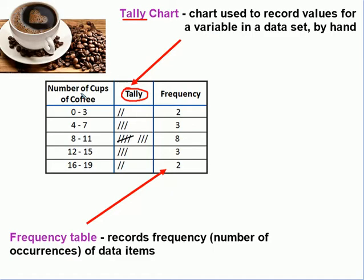So in our tally here, we have our tally chart, we are counting the number of people who had between 0 and 3 cups of coffee. And so we look at our data and we find there are two of them, so we put a slash mark for each one. For people who had between 4 and 7 cups of coffee, again we put another slash there for each one. And we continue on doing that to record the values for our variable, just like it says under tally chart.